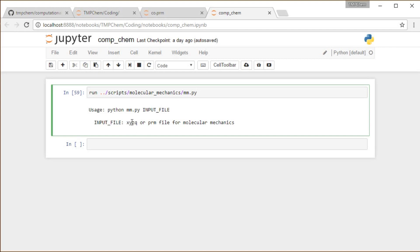It tells you to run Python mm.py and give it an input file, which is either x, y, z, q, or prm. I'm going to go up a directory, go to the geometry subdirectory, and these prm files are in this prm directory. I've placed various examples. I'm going to look at carbon monoxide.